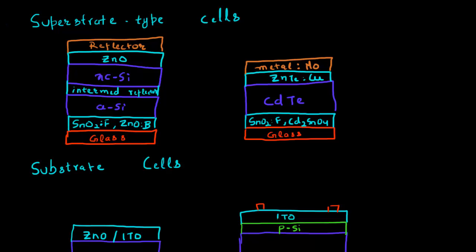One of the cell configurations for making these thin film solar cells is called the superstrate type configuration. This involves starting with a layer of glass, and your cell is made on top of this piece of glass. Then the light on this cell is incident from the top of the glass.